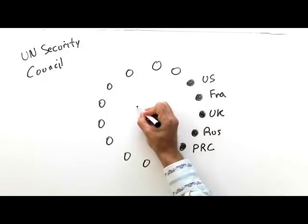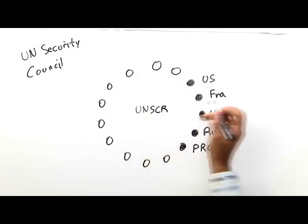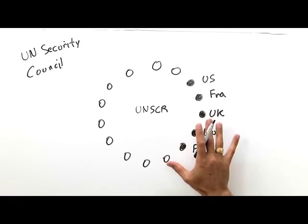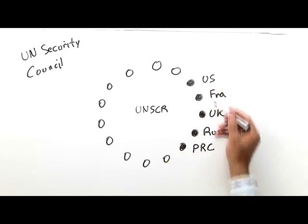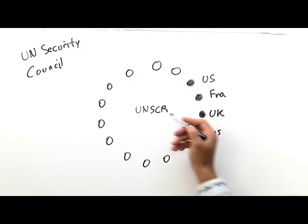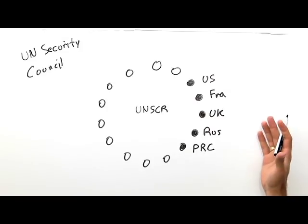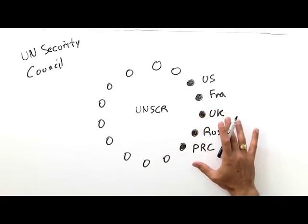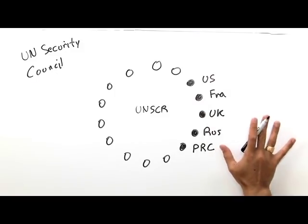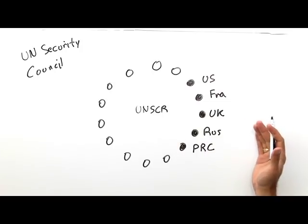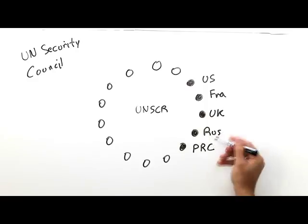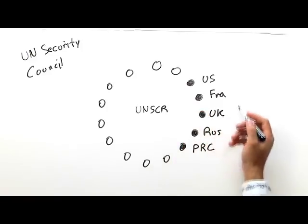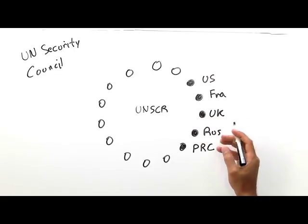In order to pass a United Nations Security Council resolution, it requires nine affirmative votes out of 15, and no vetoes. In other words, if any one of these five countries casts their veto, the resolution fails — it will not be adopted by the Security Council. There are also abstentions, and contrary to the actual wording of the UN Charter, in practice an abstention means a resolution can still pass if one of the five veto-wielding members abstains. You still need nine out of 15 votes, but an abstention rather than a veto is acceptable.